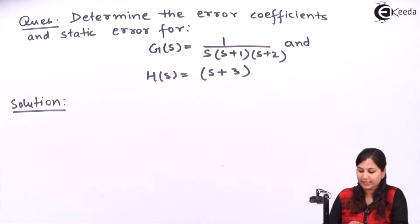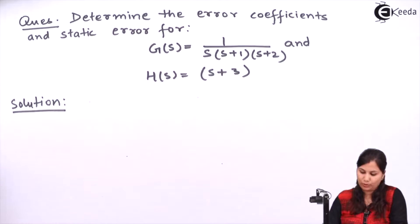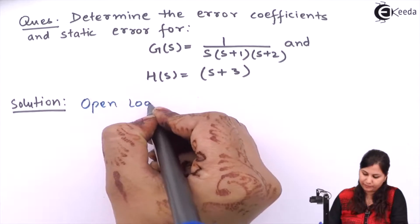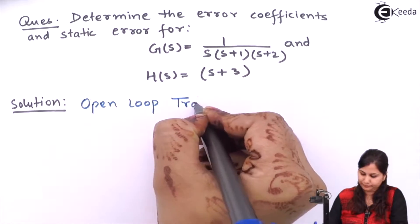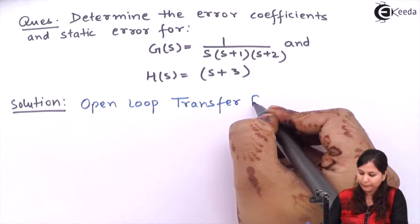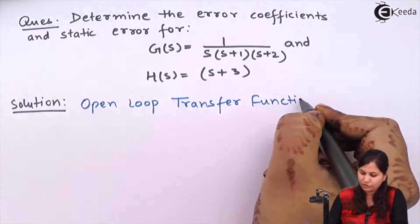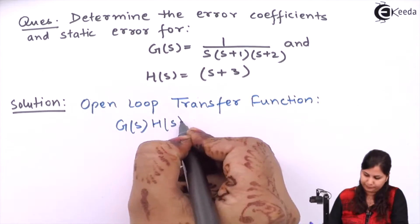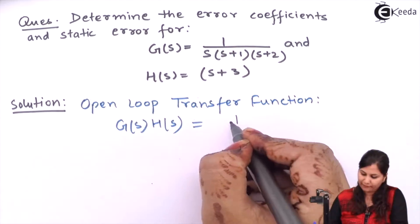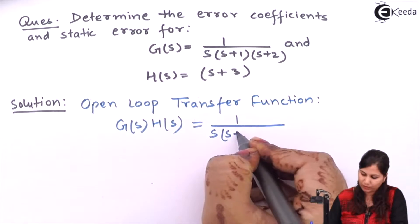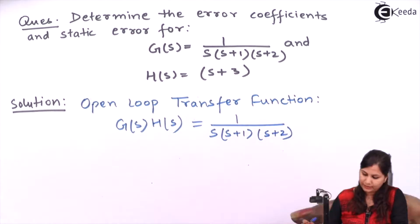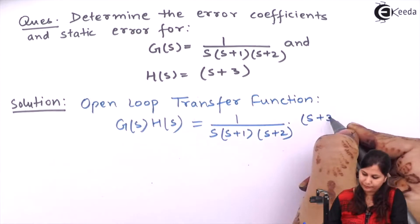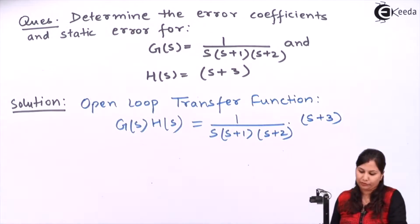This is G(s), the forward path gain which is given to us. First we will find out the open loop transfer function. The open loop transfer function is G(s)H(s). So multiplying these two, we have 1 upon S(S+1)(S+2) multiplied by H(s), that is (S+3). This is our open loop transfer function.